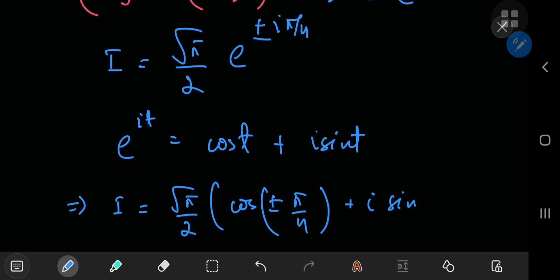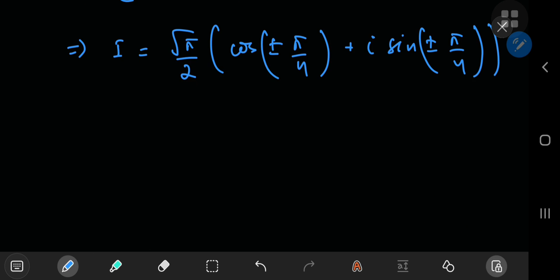implies that our integral i equals square root pi by 2 cosine of plus minus pi by 4 plus i times the sine of plus minus pi plus minus pi by 4. And now we can just make use of the fact that the cosine is an even function.